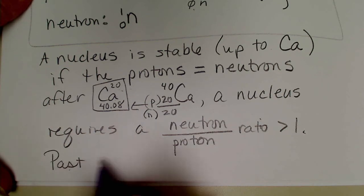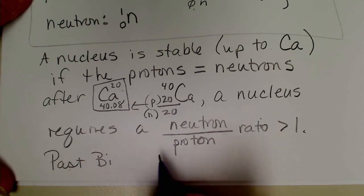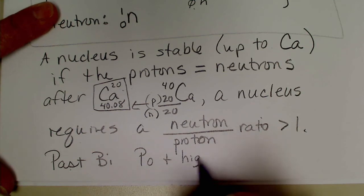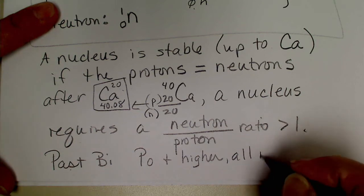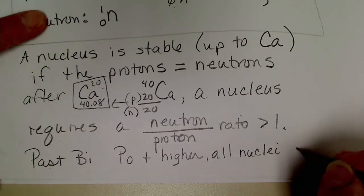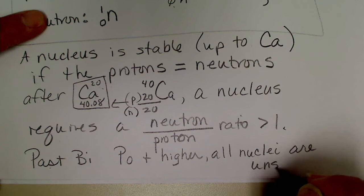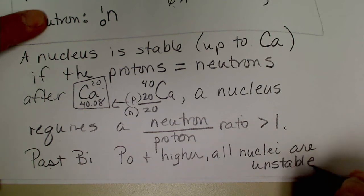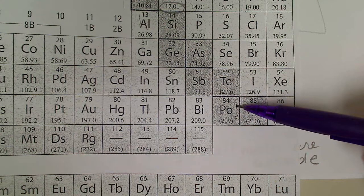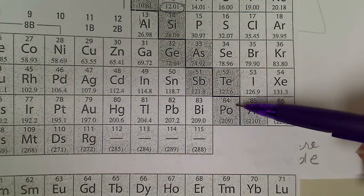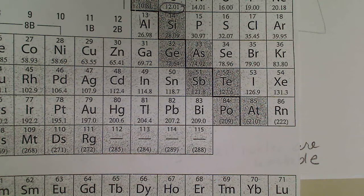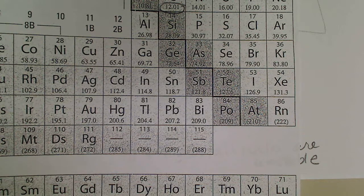And then any atom past bismuth, heavier than bismuth - that's really starting with polonium, so polonium and higher - all nuclei are unstable. So all of these atoms will undergo radioactive decay, and I'm going to look at the belt of stability - are unstable. So if we pull out the periodic table again, polonium was named after Madame Curie's country, Poland. So from atom number 84 and up, all of those nuclei are just too large to be stable.